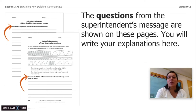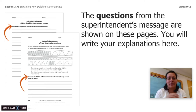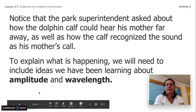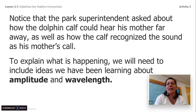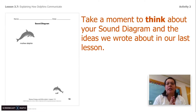The questions from the superintendent message are shown in your investigation notebooks on pages 75 and 76. If you have those, go ahead and open your investigation notebooks because you're going to need that. If you don't have them, no worries — I have written out the questions here for you. Like always, you can stop the video and take your time to answer the questions. We're going to notice that the park superintendent asked about how the dolphin calf could hear his mother far away, as well as how the calf recognized the sound as his mother's call. To explain what is happening, we will need to include ideas we have been learning about amplitude and wavelength.